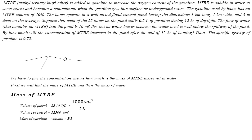Now we use the formula to calculate mass. We know density = mass / volume. Since we are working relative to water, we use specific gravity in place of density. Therefore, mass of gasoline = volume × specific gravity. With specific gravity = 0.72, we get: mass = 12,500 × 0.72 = 9,000 grams. Keep in mind this is the mass of the gasoline, not yet the mass of the MTBE.